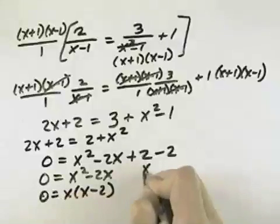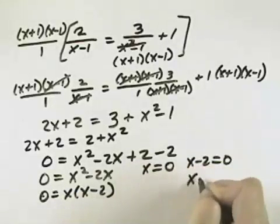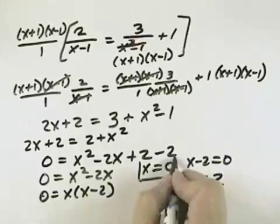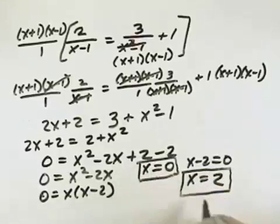And so setting each of those equal to 0, I get x equals 0 and x minus 2 equals 0, which gives me the solutions of 0 and 2. And neither of those make the denominator 0, so neither are undefined. Therefore, they are both solutions.